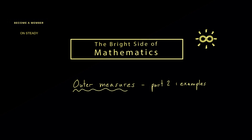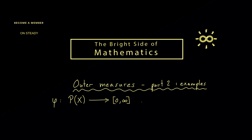Maybe it's a good idea to start by restating the properties of an outer measure. We always call the map phi, defined on the power set of a given set X, with values in the non-negative numbers including infinity. Such a map phi is called an outer measure if it sends the empty set to zero, is monotonic, and is sigma sub-additive.